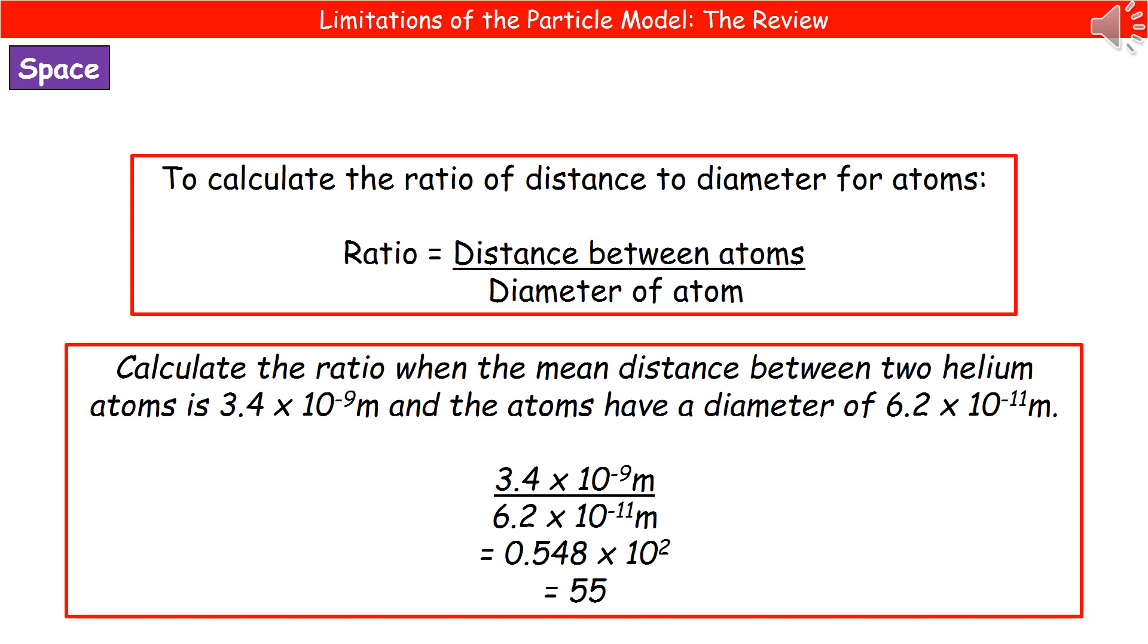As soon as you've got that, plug those numbers in. Then you'll get an answer of 0.548 times 10 to the 2, which could also be written as 55. This could very well be a multiple choice question, so just look for either of those two answers.